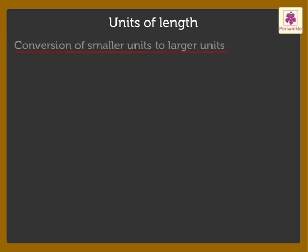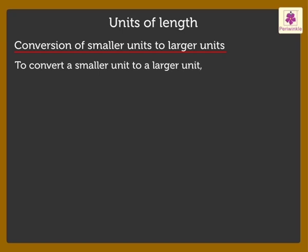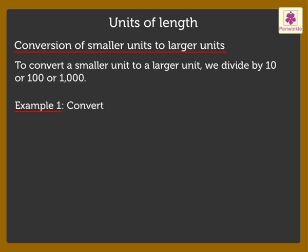Next is the conversion of smaller units to larger units. Here, to convert a smaller unit to a larger unit, we divide the number by 10 or 100 or 1000. Convert 400 centimetres to metres. So, 400 centimetres is equal to 400 divided by 100 is equal to 4 metres.